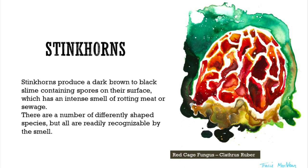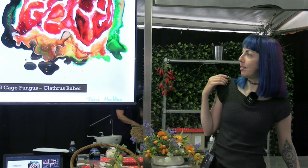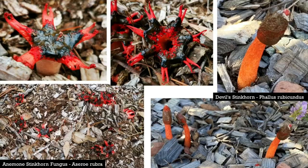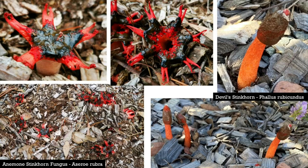Stinkhorns are a really interesting section of mushrooms because they vary quite a lot and look like alien-type organisms. The way many stinkhorns reproduce is by creating a liquid that smells quite strongly, has a lot of spores in it, and attracts flies. The flies get excited by this goo and wriggle around in it, moving the spores around in that way.